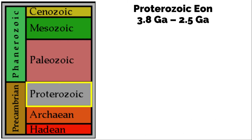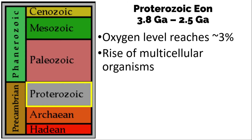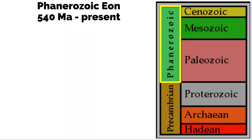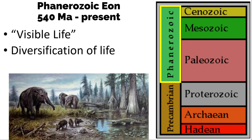Next, we have the Proterozoic Eon, from 2.5 GA to 540 MA. Here, oxygen level reaches 3% of the atmosphere, and there is a rise of multicellular organisms represented by the Vendian fauna. The ozone layer started to form. Then we have the Phanerozoic Eon, from 540 MA to the present — called the eon of visible life. Here there is diversification of life, and many life forms are represented in fossil records, meaning those life forms had preservable hard parts.